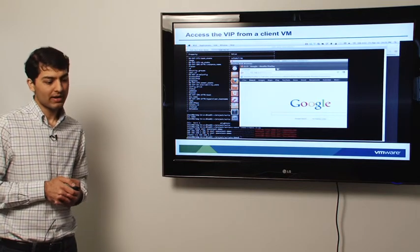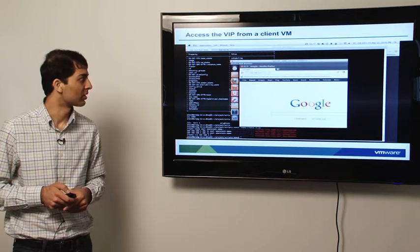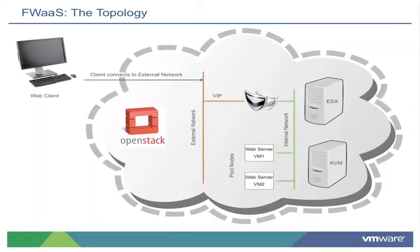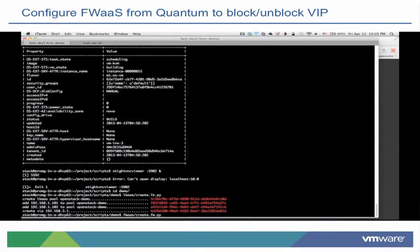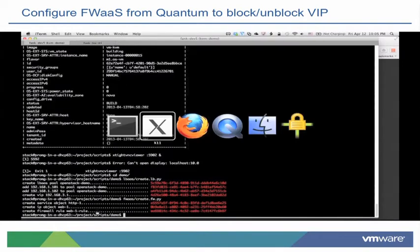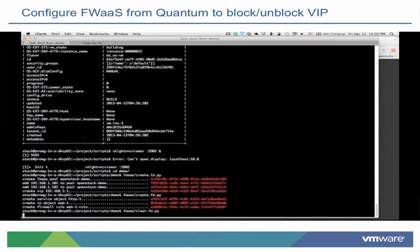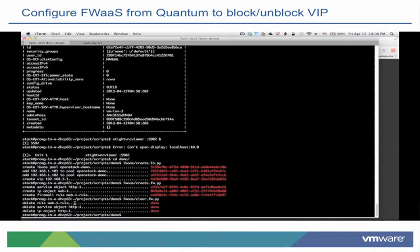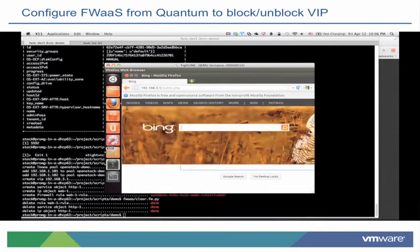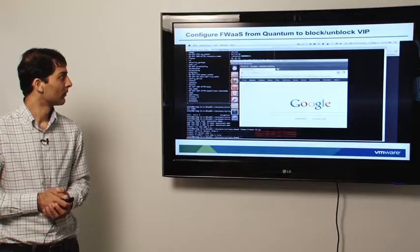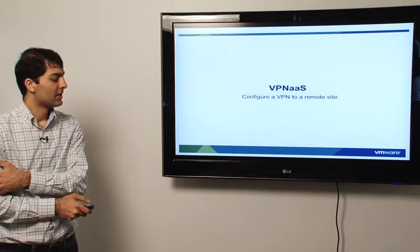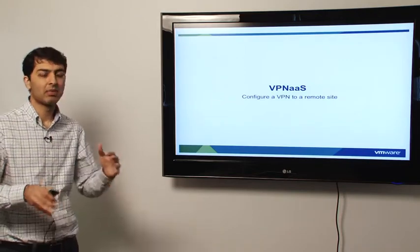Now let's add a firewall rule and see if that works. We're going to drop a firewall rule on the VIP on port 80, which is the port being used by the web servers. We go back to our scripts, create an IP object for the firewall, and create a firewall rule to block port 80. As soon as that's done, we click refresh in our web client VM and see it constantly spinning in a connecting state — the firewall is actually blocking port 80 as desired. That's a fundamental basic use case, but it can be applied in many different ways.